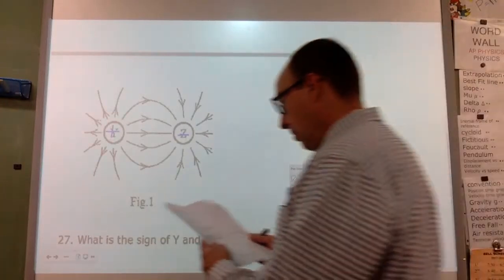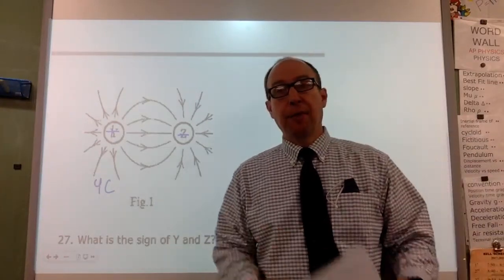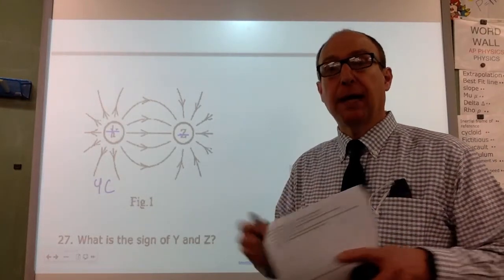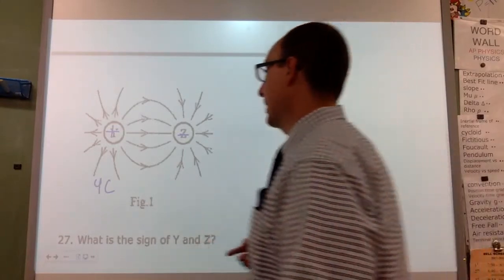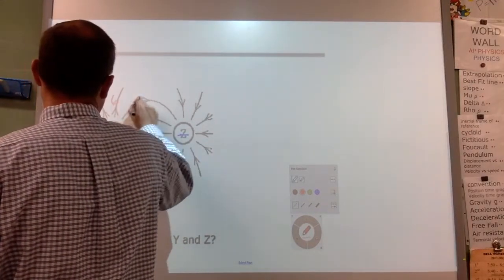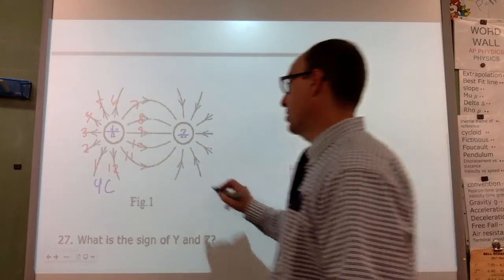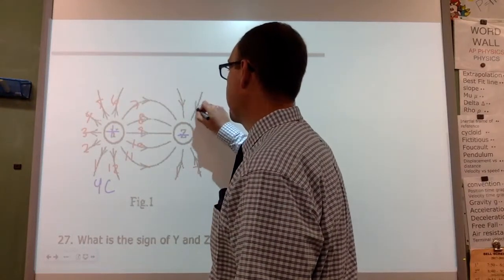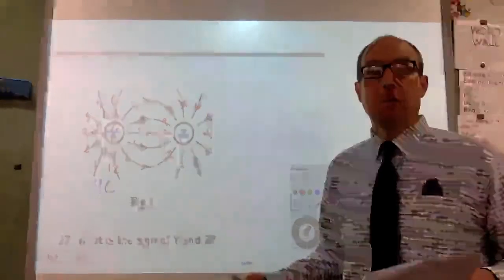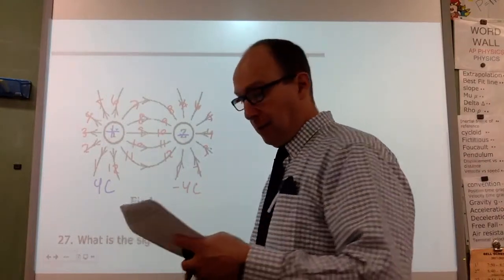The next question says: if Y is 4 C, what is the charge of Z? The magnitude of charge is related to how many field lines there are — a higher concentration of electric field lines represents more charge. Counting the positive charge, it has 12 field lines, and the negative charge also has 12 field lines. Since they have the same number, if Y is positive 4 C, then Z is negative 4 C.